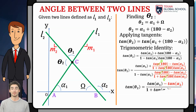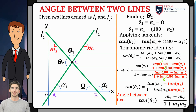Finally, using the definition of slope, we have that the angle of two lines theta2 is calculated as the arctangent of the difference of slopes 1 and 2 over 1 plus the product of those same slopes. It is important to reiterate that the angle between the two lines that you want to calculate does matter.